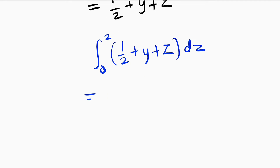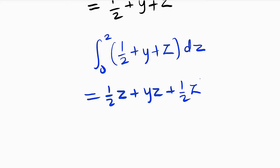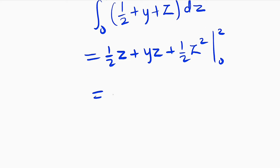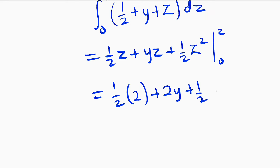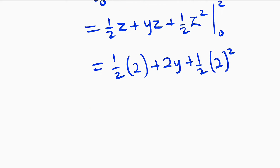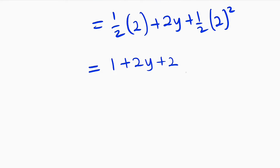Now we are going to integrate. 1 over 2 and y are constants, so we multiply them by z. We have 1 over 2 z plus yz, and for z we integrate to get 1 over 2 z squared, with boundaries from 0 to 2. Wherever we see z we substitute by 2: 1 over 2 multiplied by 2 plus 2y plus 1 over 2 times 2 squared. We don't have to substitute the lower bound because it is going to make everything 0. Simplifying: half times 2 is 1, plus 2y, and 2 squared is 4, times half is 2. So we obtain 3 plus 2y, or 2y plus 3.